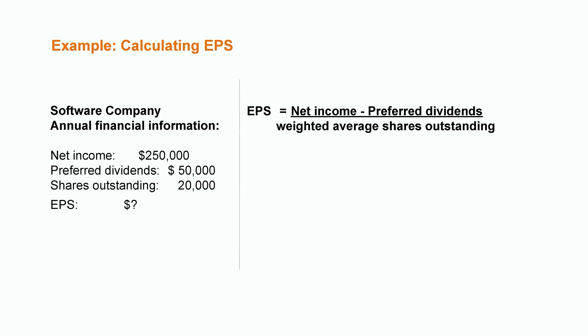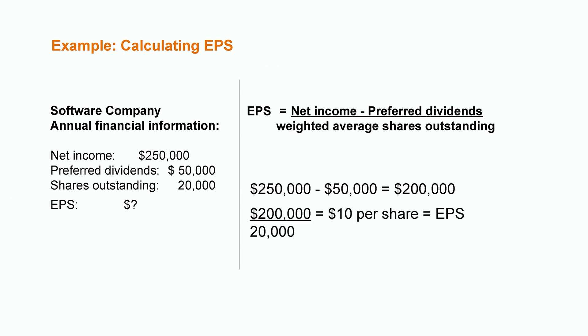Let's run through a brief example of a software company whose financial data for the year is displayed on the screen. In this particular year the company had net income of $250,000, and since they were so profitable they were able to pay cash dividends to their preferred shareholders of $50,000. Their weighted average shares outstanding was 20,000 shares. Step one: take net income of $250,000 and subtract preferred dividends of $50,000, leaving $200,000 as our numerator. Step two: divide $200,000 by 20,000 shares for an earnings per share result of $10 per share.